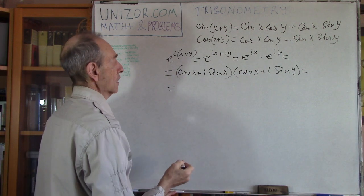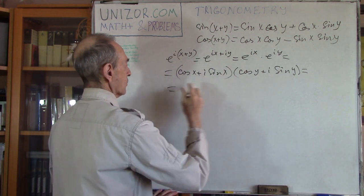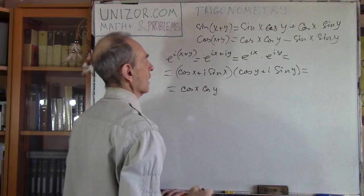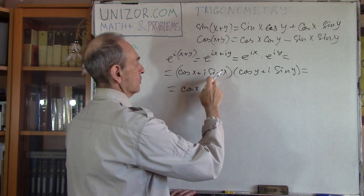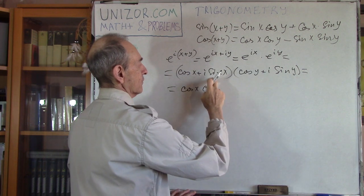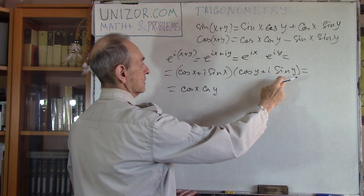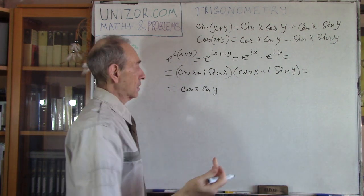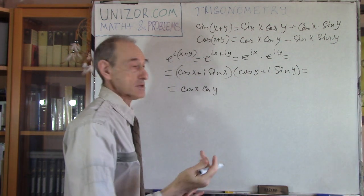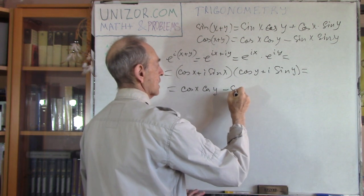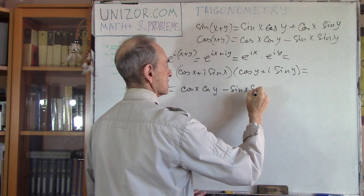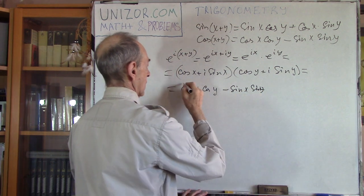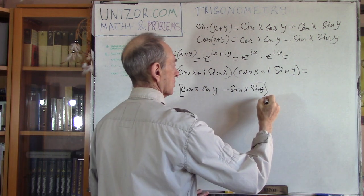Let's just multiply. Cosine times cosine gives cosine x cosine y. Then this times this is sine times sine with i squared. Since i squared equals minus one, I put minus sine x sine y. Plus, multiplying cosine by i·sine gives i·sine x cosine y. Plus, the other cross term gives i·cosine x sine y.